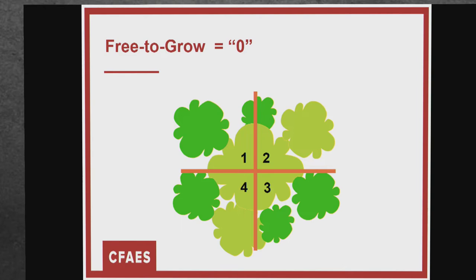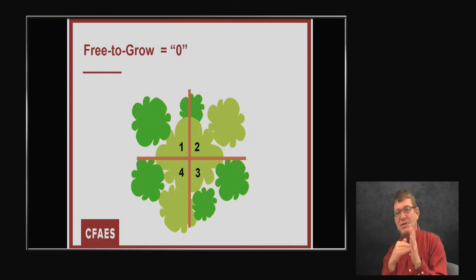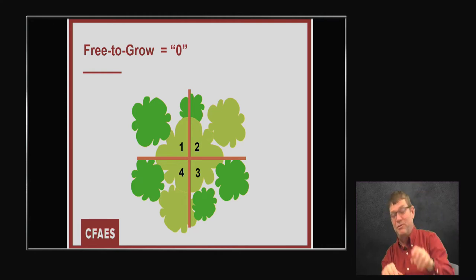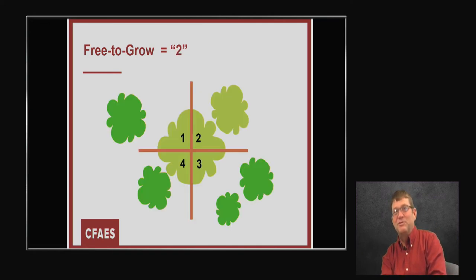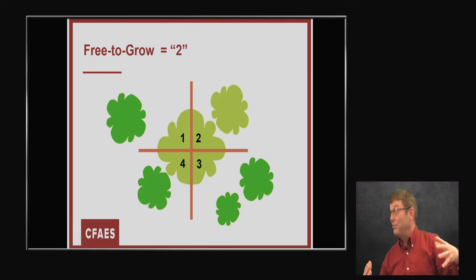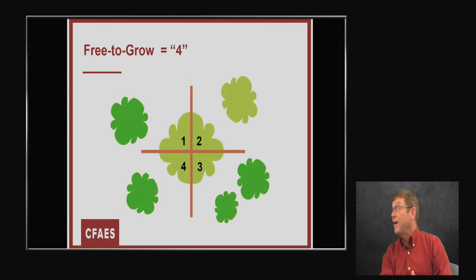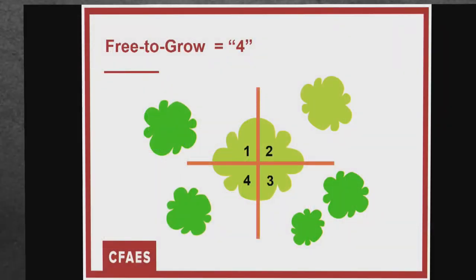If a tree is touching the canopy of our crop tree in a given quadrant, there is no room for it to grow, so that quadrant gets a zero. In this case all four quadrants don't get points, so it's not free to grow at all. A free-to-grow rating of two means it has some room to grow in two quadrants — the canopy will be a little deeper and it gets more sunlight. A free-to-grow rating of four means it has space on all sides. When we walk into most young woods, they have free-to-grow ratings of zero or one — they're crowded, almost stunted.